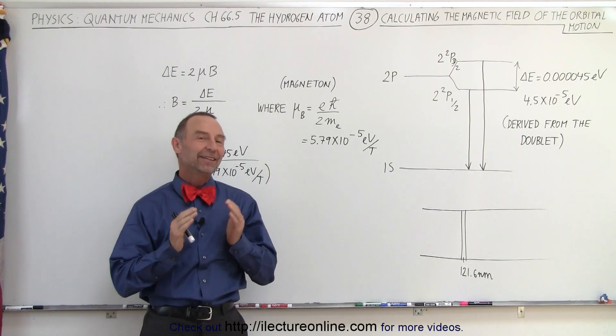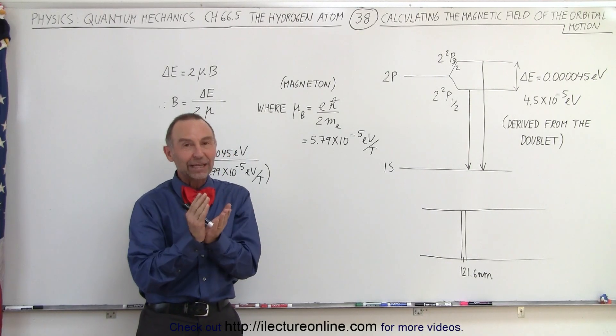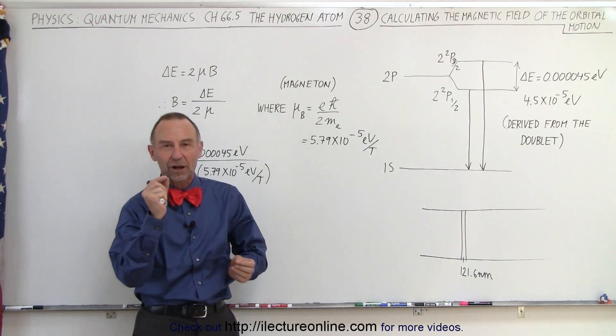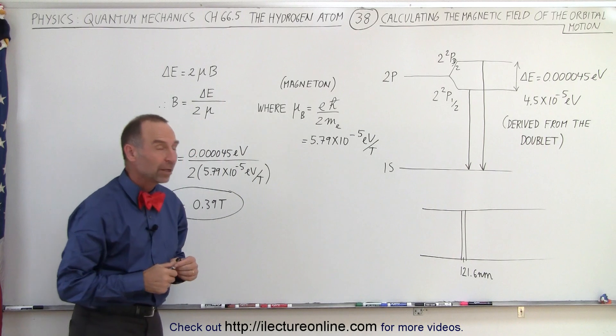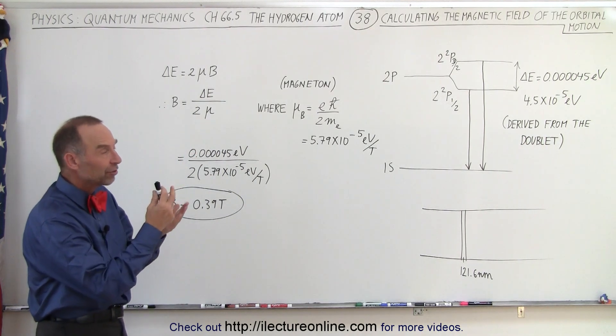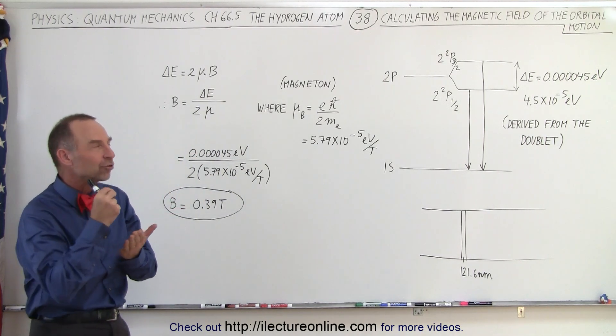Welcome to ElectronLine. In this video we're going to explore how they determined the magnetic field caused by one electron orbiting the nucleus in the hydrogen atom. We can do that by taking advantage of the knowledge now of that fine structure.